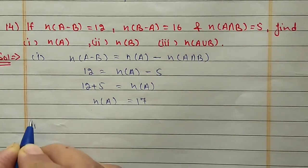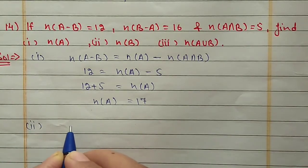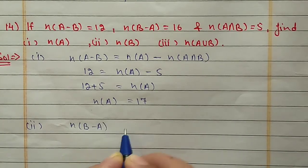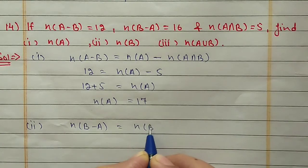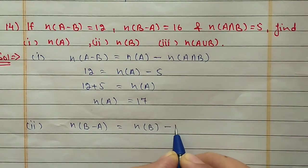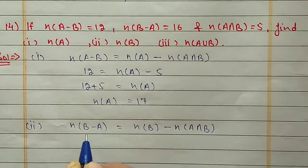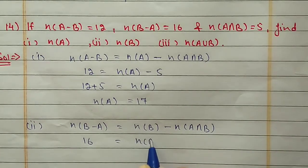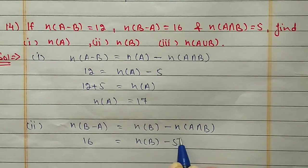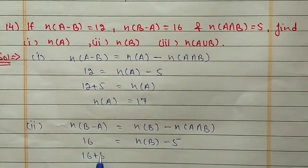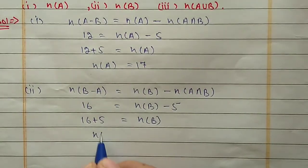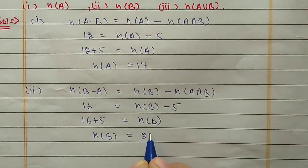For the second part, N(B): using the same property N(B - A) = N(B) - N(A∩B). N(B - A) is 16 and N(A∩B) is 5. Shifting 5 to the other side it becomes plus 5, so N(B) = 16 + 5 = 21.